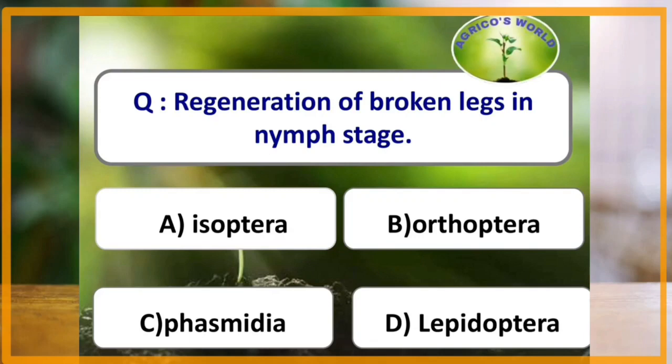Aquatic insects excrete waste product in the form of ammonia. Regeneration of broken legs in nymph stage is seen in which of the following orders? The answer is Phasmida. This phenomenon is called auto-amputation. Nymphs have a line of weakness between trochanter and femur, so the legs can be easily broken and are regenerated.